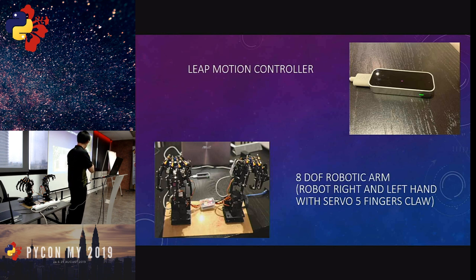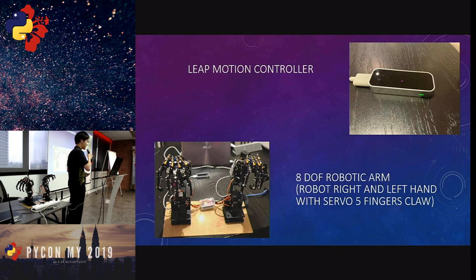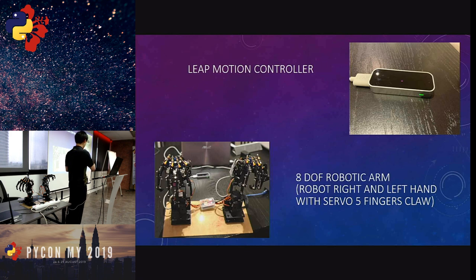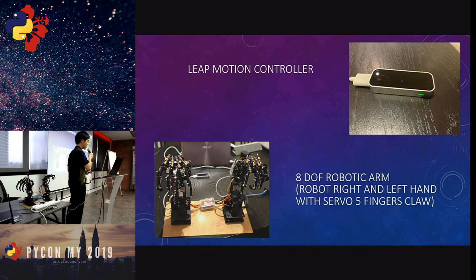The robotic arm itself has eight degrees of freedom and a servo-driven five-finger claw. I bought it on Alibaba, which shows how easy it is to get one. You can get one straight from Alibaba or another e-commerce site, and it gets delivered easily. It's very easy to start your own project — a pair of robotic arms costs around $100 to $150 tops, which makes it quite cost-efficient for such a cool project.